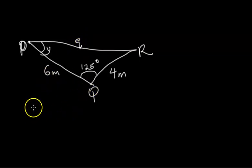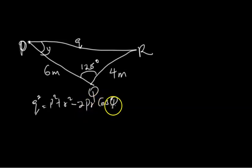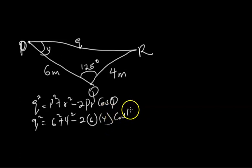Now, from cosine rule, obviously, we know that Q squared equals P squared plus R squared minus 2PR cos Q.